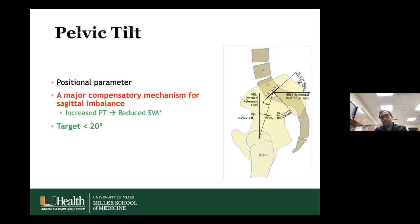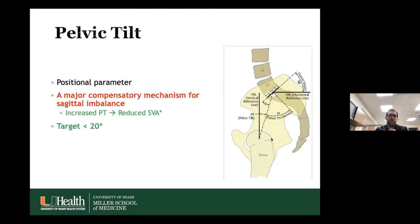Pelvic tilt is a positional parameter: the angle from a line drawn from the midpoint of the superior end plate of the sacrum to the center of the femoral head, against a vertical reference line. This changes with position and is a major compensatory mechanism for sagittal balance — this is high yield for the boards. SVA stands for sagittal vertebral axis, a measure of how forward the spine is, and as you increase pelvic tilt, you reduce SVA.